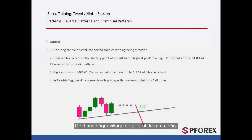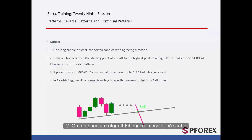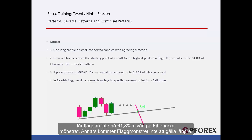There are some important notifications. The shaft can either be a very long candle or consist of multiple connected small candles with the same direction. If a trader draws a Fibonacci pattern on the shaft, the flag must not reach the 61.8% level of the Fibonacci pattern; otherwise, this flag would not be valid anymore.